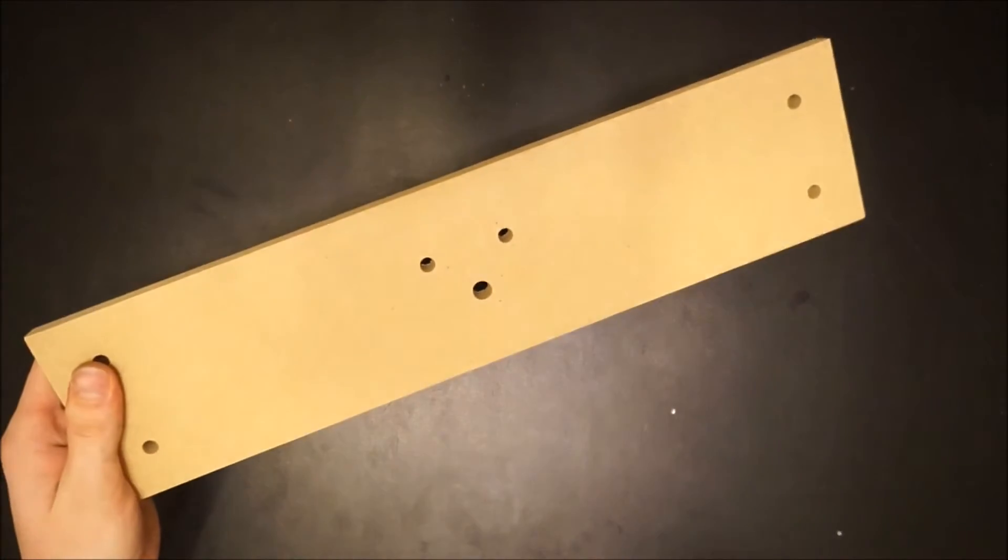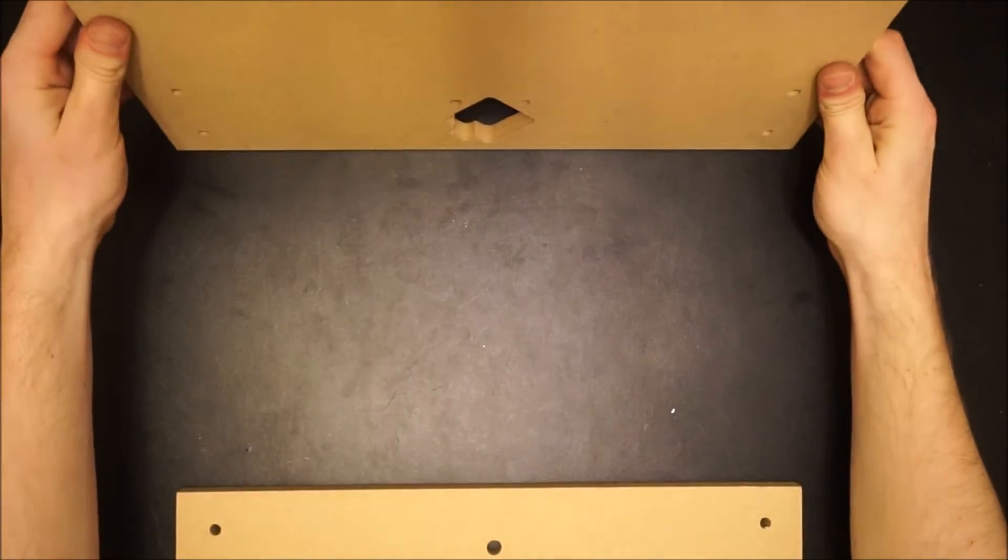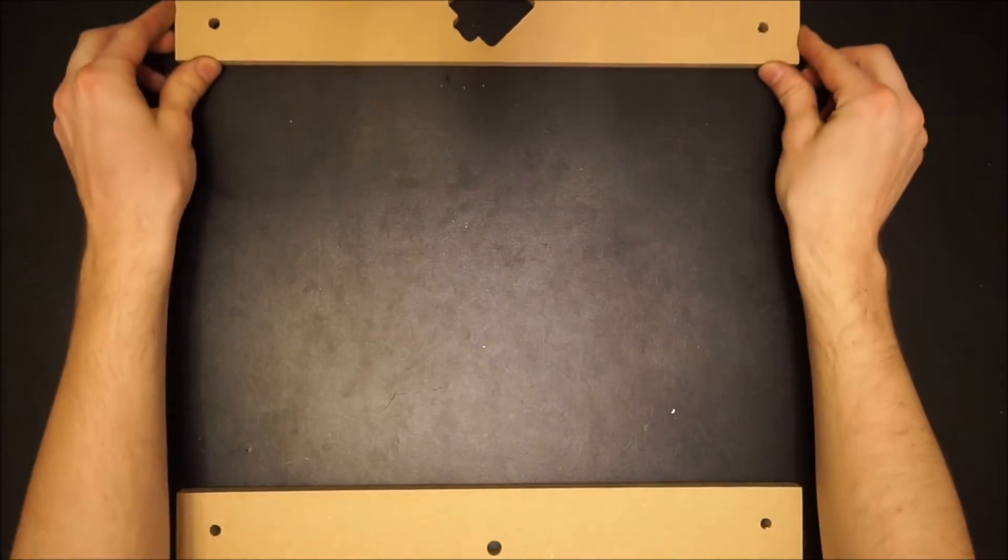Now we move on to bringing the rest of the mechanical portions of the machine together. Start by grabbing all four of the frame pieces: front, back, left and right, and lay them on a flat surface.